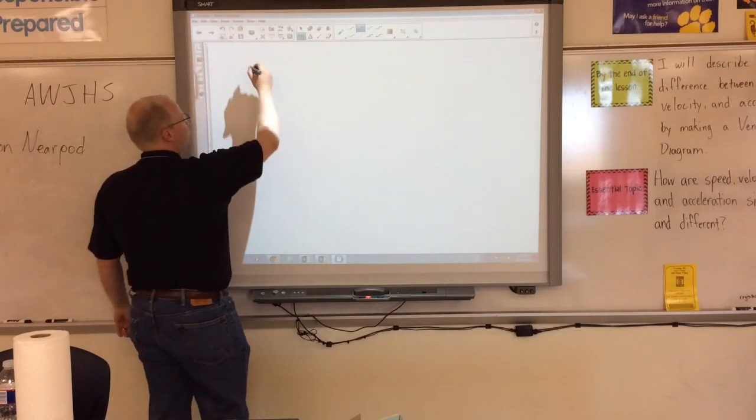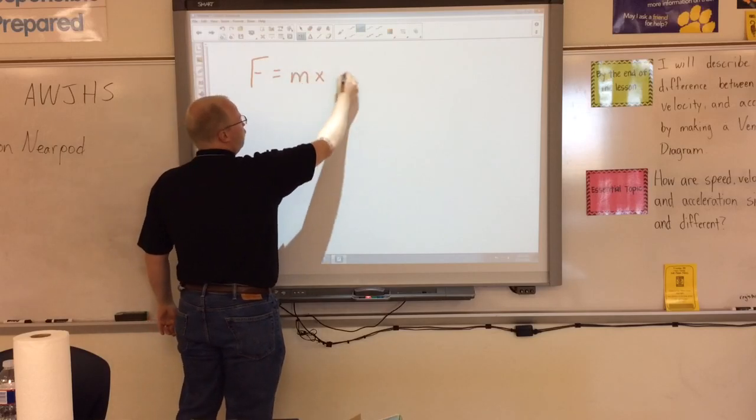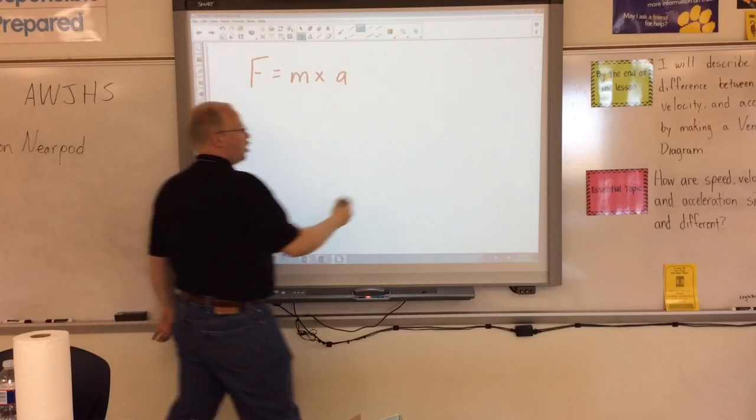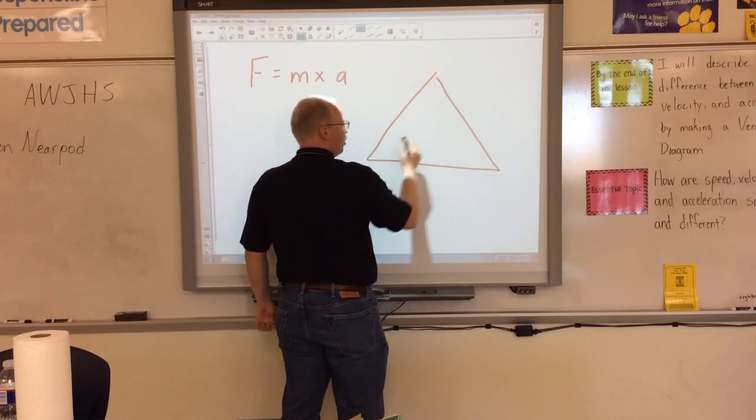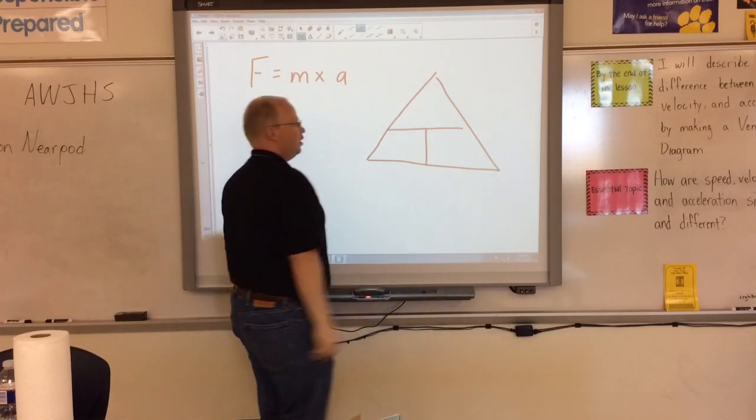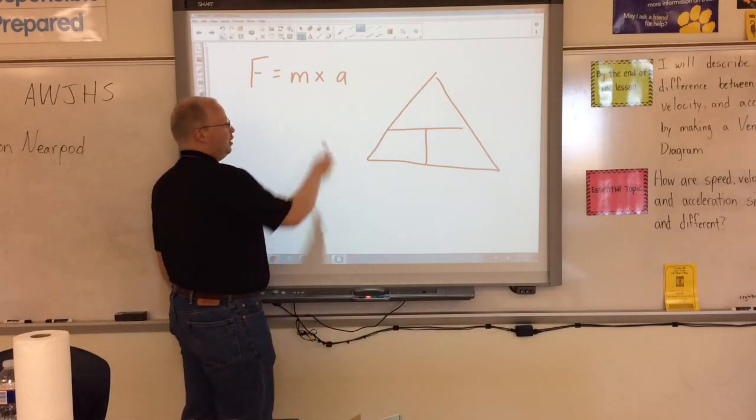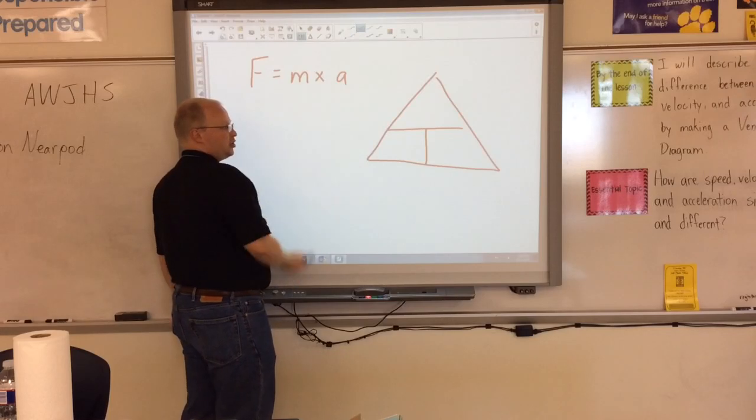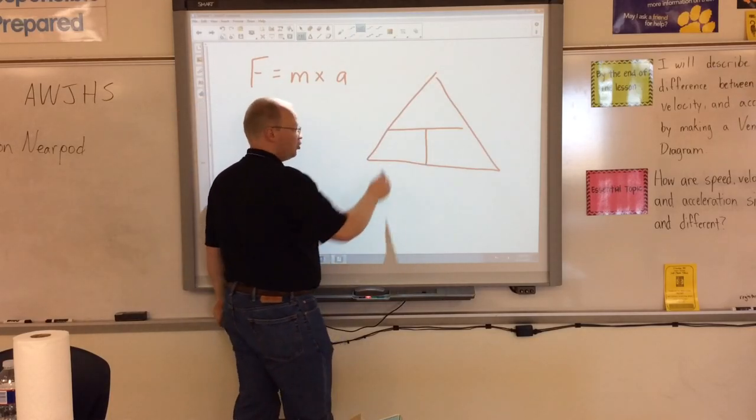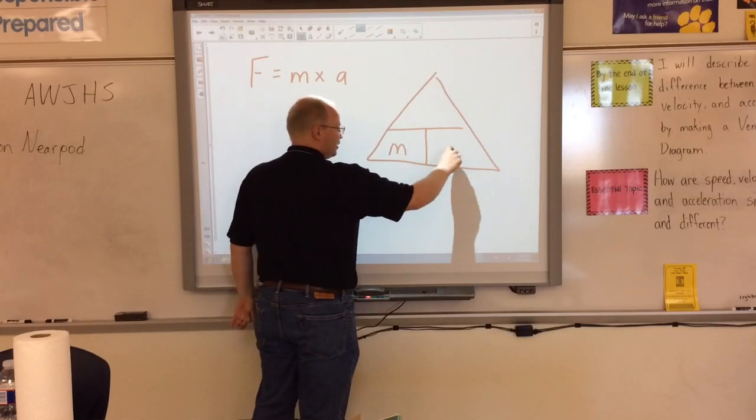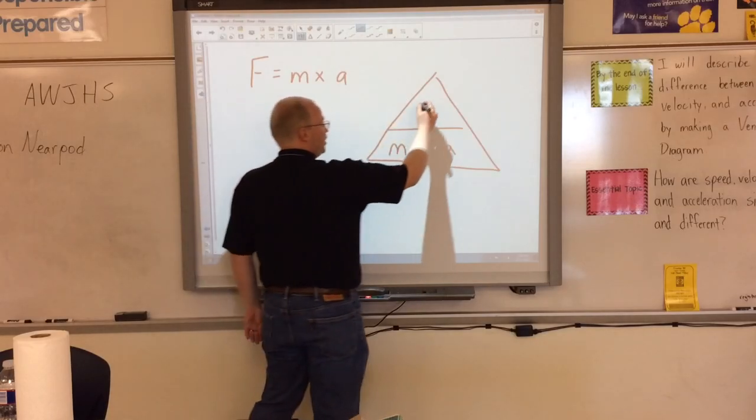To do that, if we use our formula and we use our formula triangle, just like we used for our speed formula triangle, we can actually use the triangle to help us solve for each piece. Well, mass is times acceleration in our formula, so mass and acceleration need to be times each other in our triangle. So mass and acceleration go in the bottom. And then force goes in the missing piece.